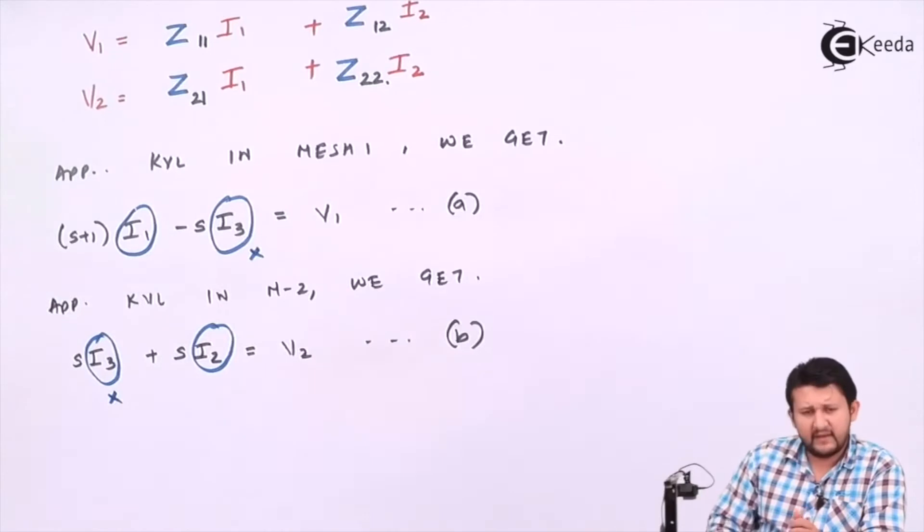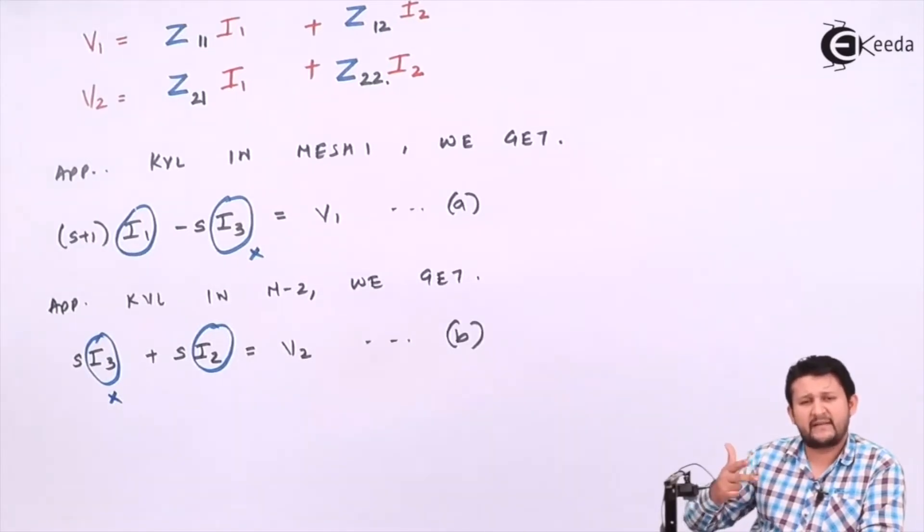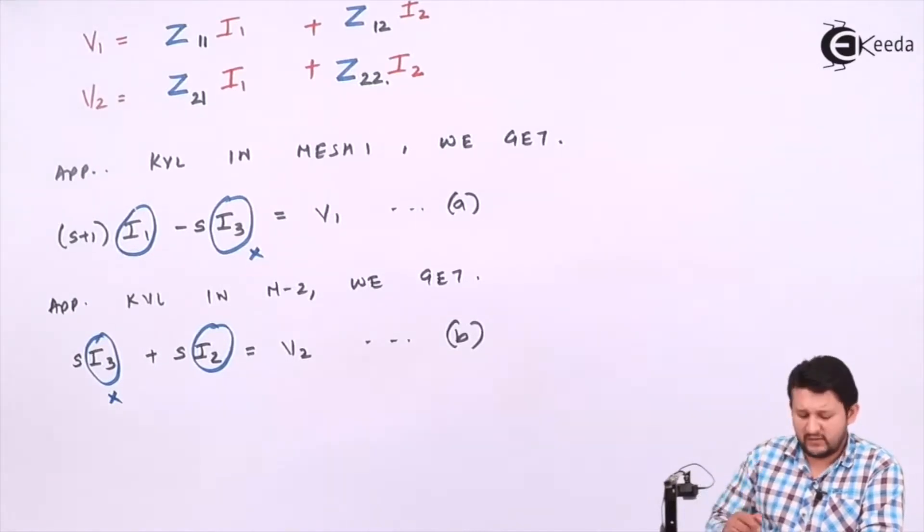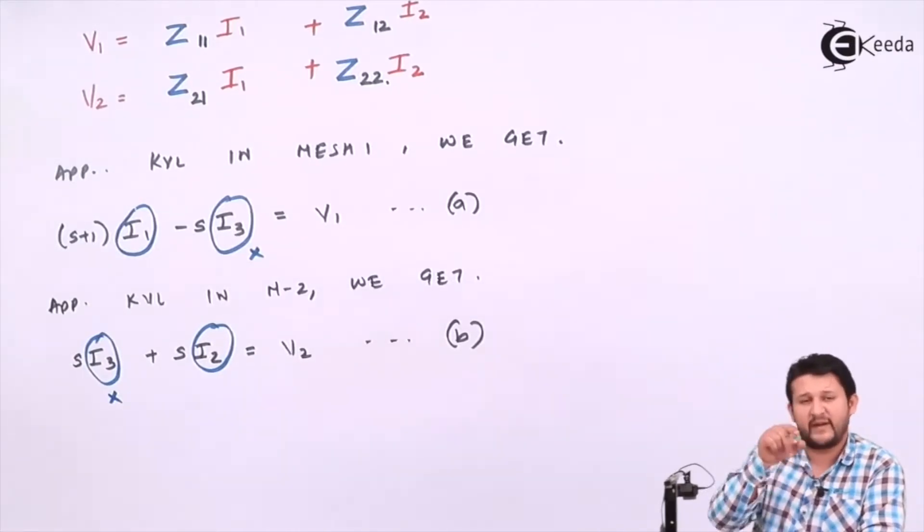My friends, if I need to replace I3, the I3 should be in terms of I1. Either my I3 should be in terms of I2, or my I3 should be in terms of I1 and I2. So these are the three possibilities we need to work on. So let's have a look. If I need to find I3, then I need to apply KVL in the middle.